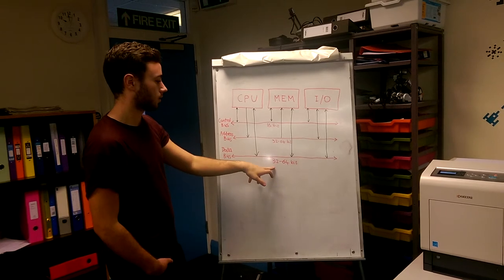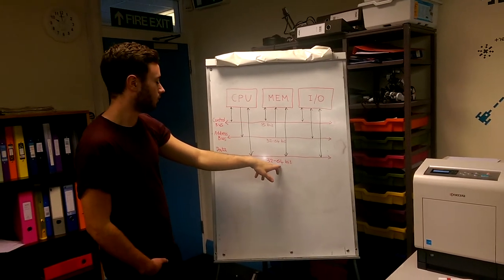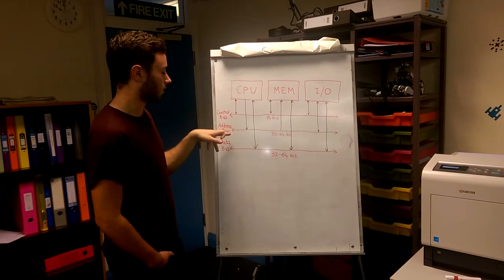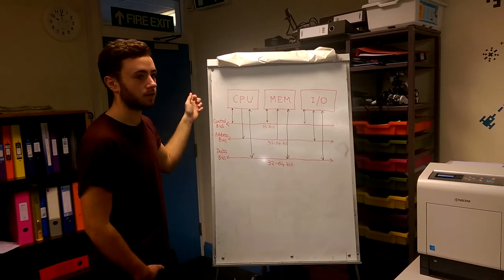The standard bit sizes are 32 or 64 bits for the data bus, 32 or 64 bits for the address bus, and 8 bits for the control bus.